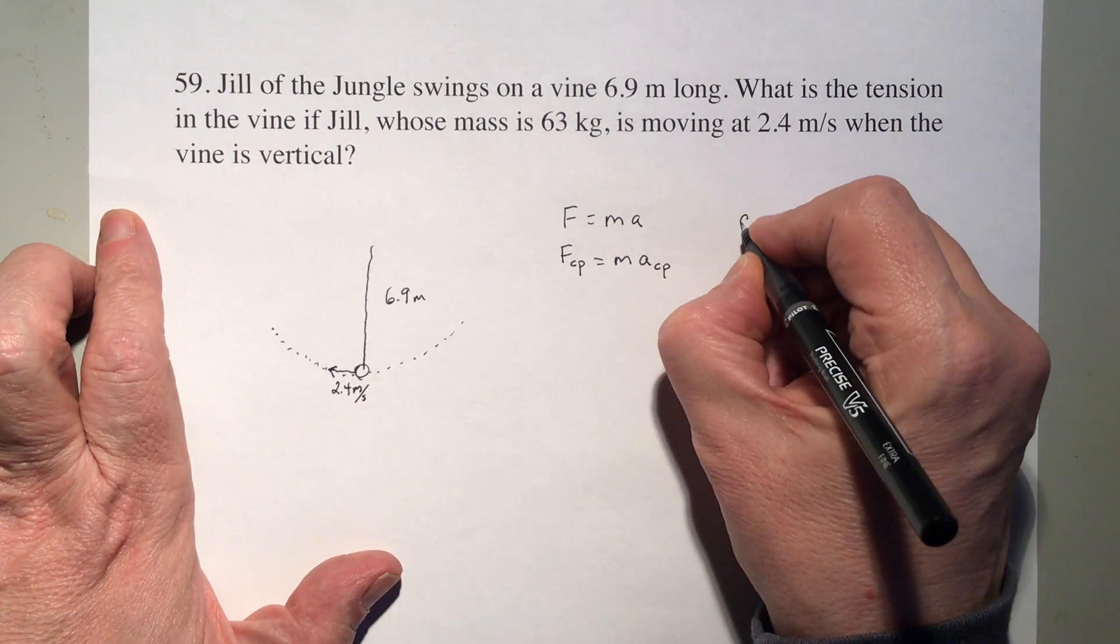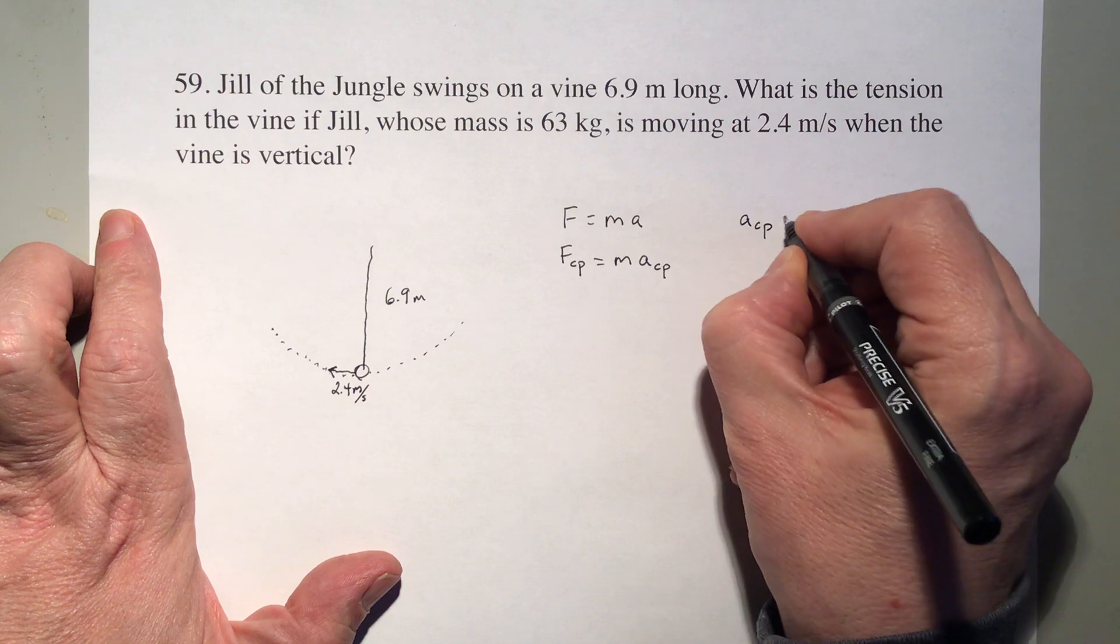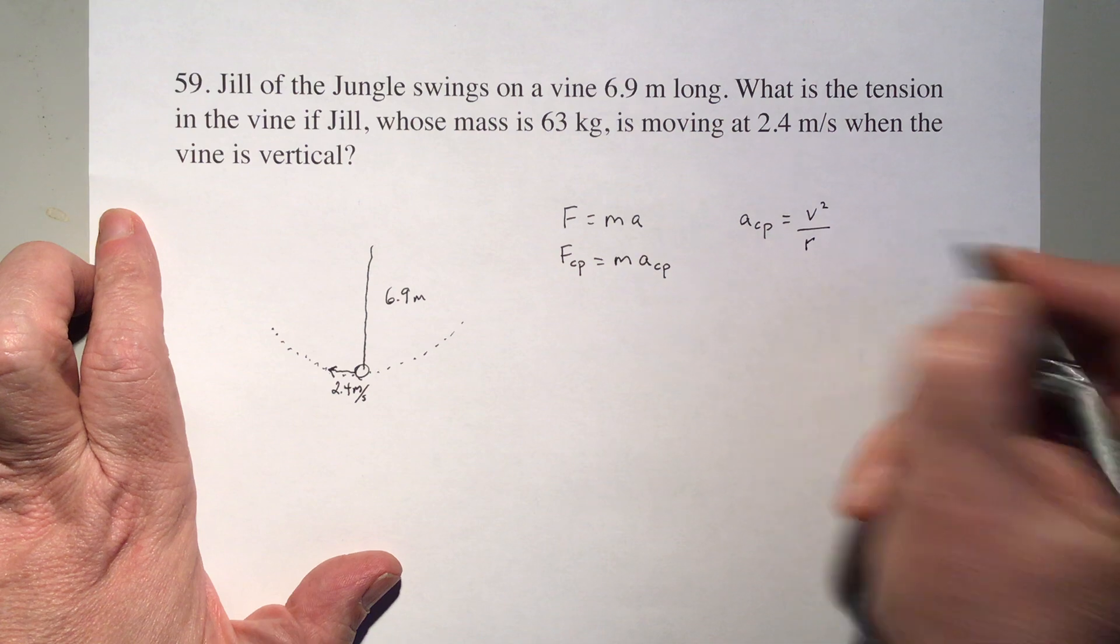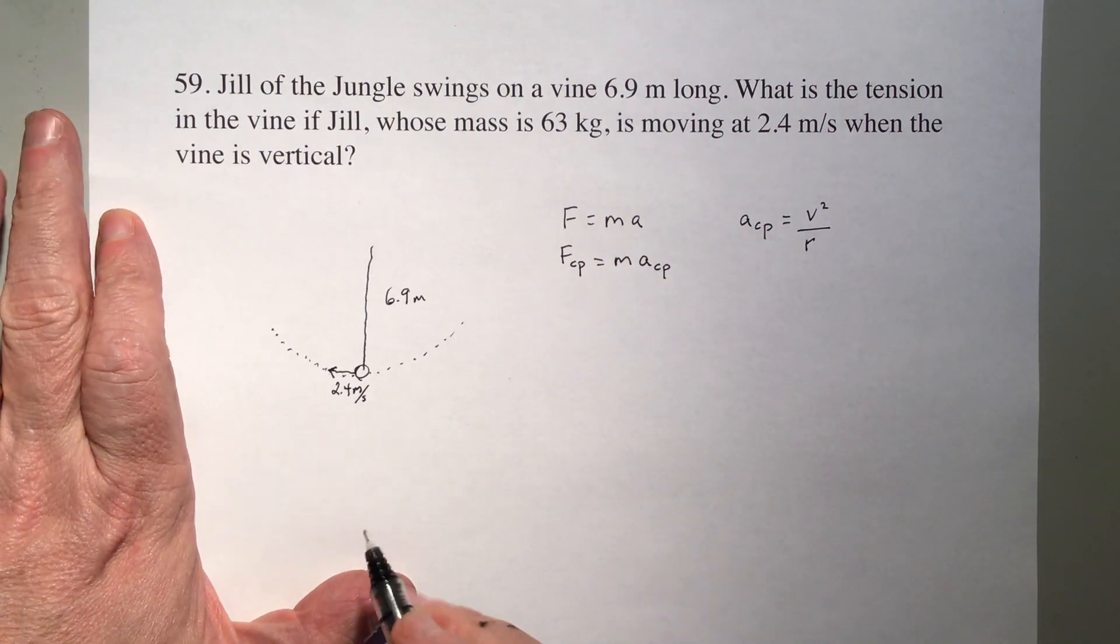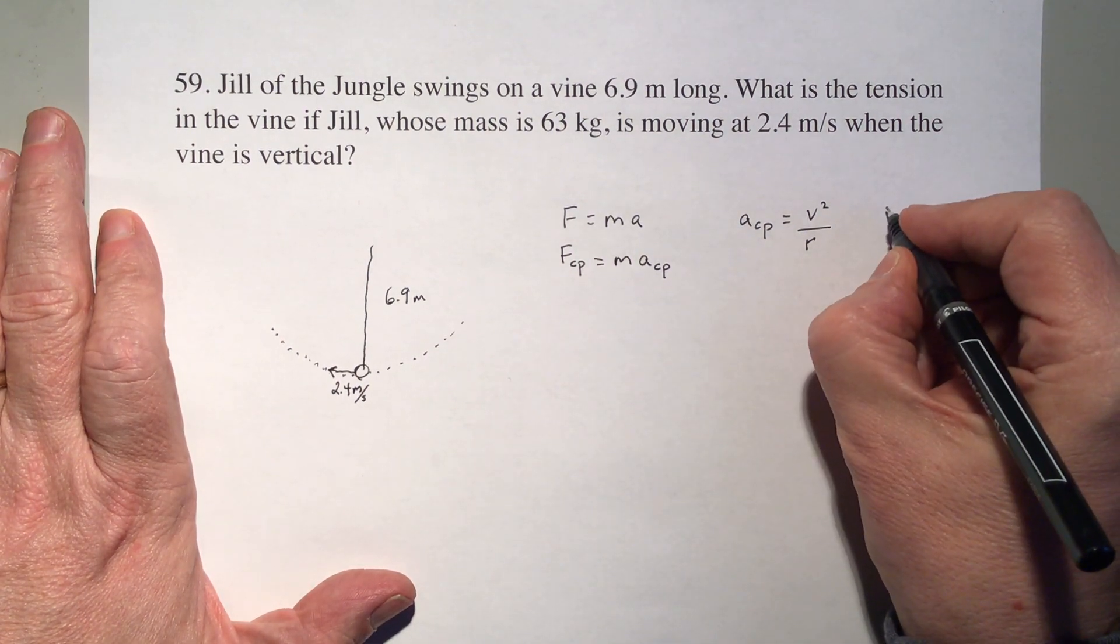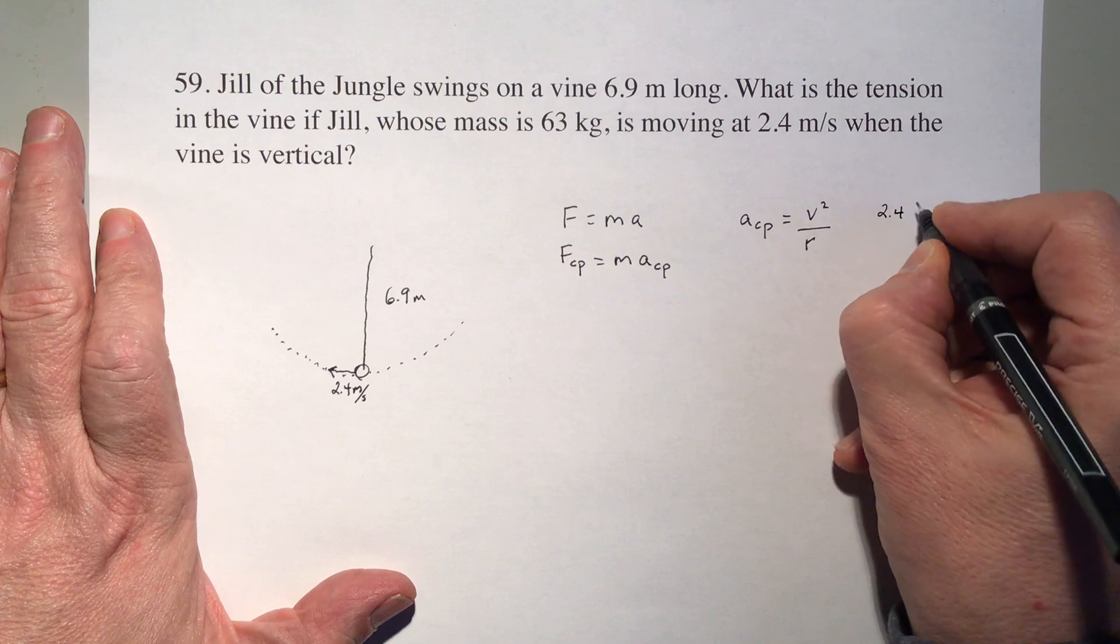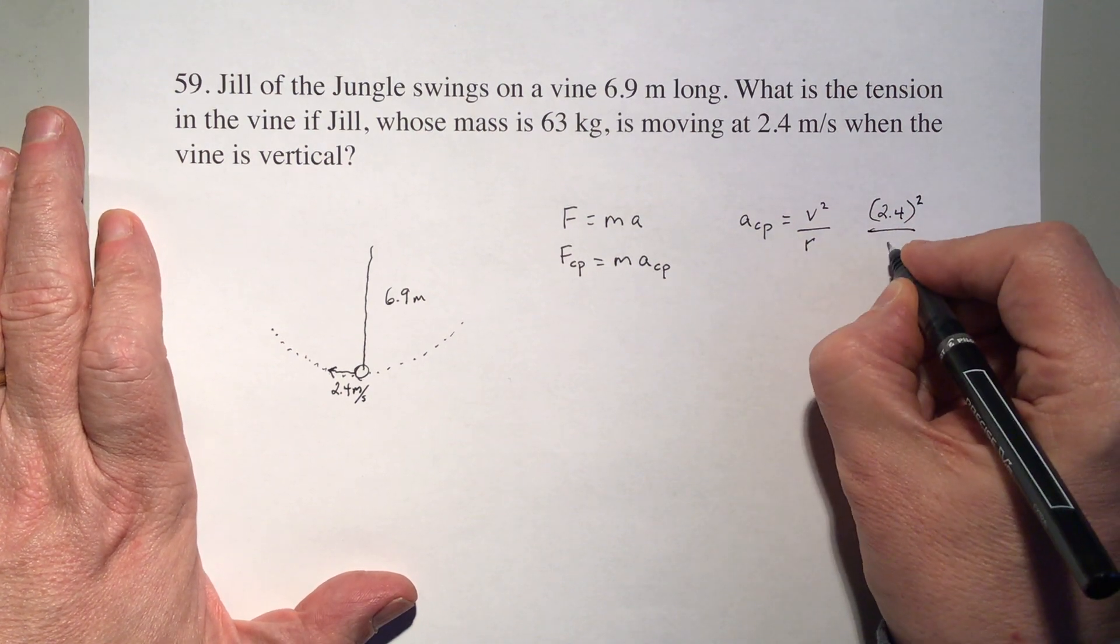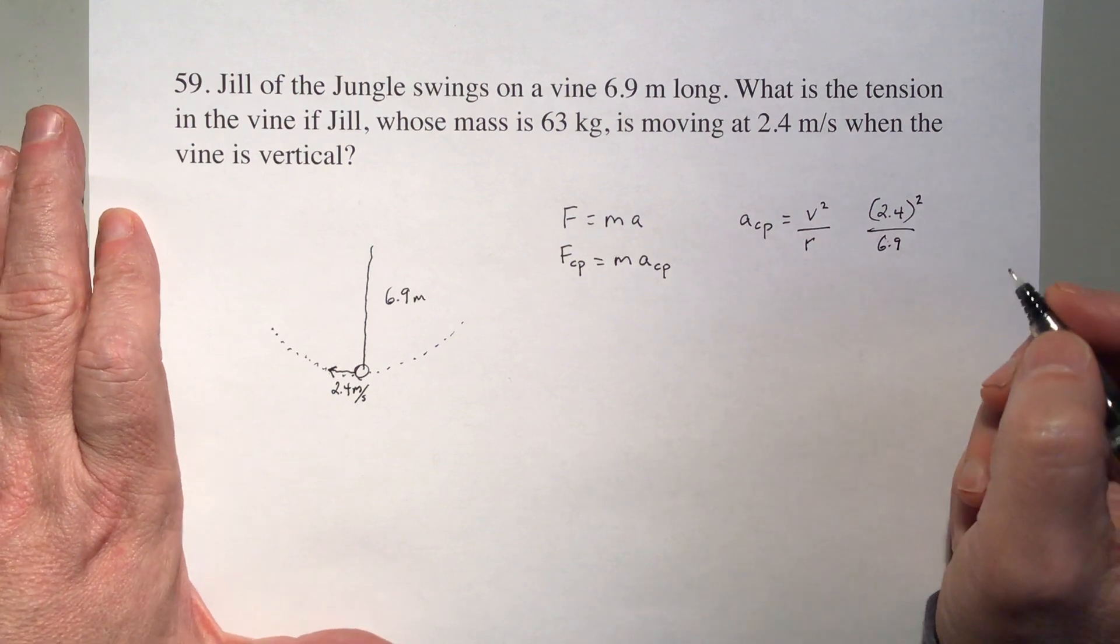We also know that centripetal acceleration equals the square of the velocity over the radius. So this we can figure out. We know that this is 2.4 meters per second squared over 6.9 meters.